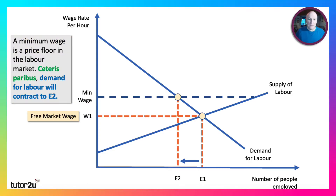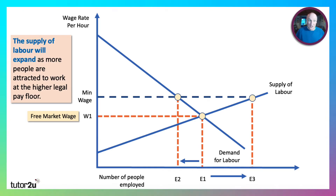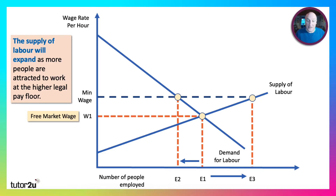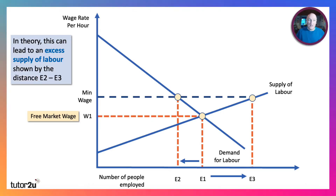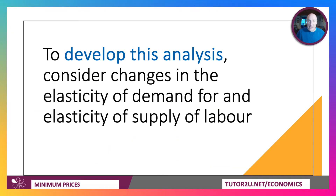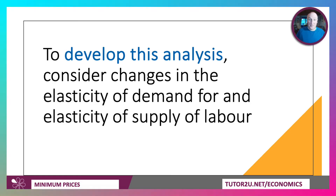With the minimum wage set above W1, that normally leads to a contraction in labour demand from E1 to E2, but also encourages an expansion of supply. More people are attracted to work at a higher wage, so supply expands to E3, demand contracts to E2, and in theory this can lead to an excess supply of labour shown by the distance E2 to E3. In the exam, if you get a question on minimum wages, consider changes in the elasticity of demand for and supply of labour, as that will impact on the consequences of a minimum wage.